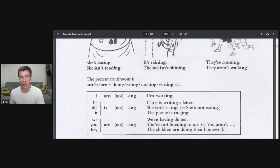The present continuous is am, is, or are plus doing, eating, running. If it's I, it's I am plus ing. If it's only one, he, she, it is plus ing. And if it's plural, if it's many, we, you, they are plus ing.